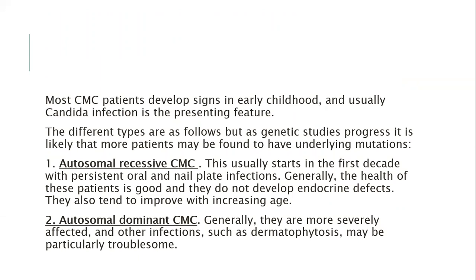The different types of chronic mucocutaneous candidiasis: the autosomal recessive type usually starts in the first decade with persistent oral and nail plate infection. Generally the health of the patient is good, they do not show endocrine defects, and tend to improve with advancing age. The autosomal dominant type is more severely affected, with other infections such as dermatophytes being particularly troublesome. The idiopathic type is a useful subgroup describing the most severely affected patients, who may have other infections and often develop bronchiectasis and pulmonary pathology; candidiasis is usually very severe with esophageal involvement and appearance of Candida granulomata.